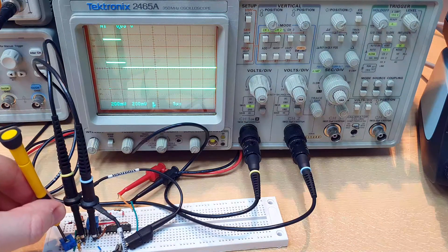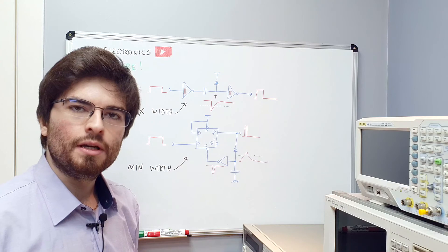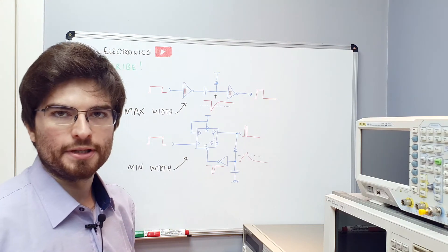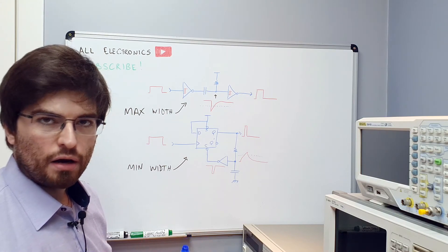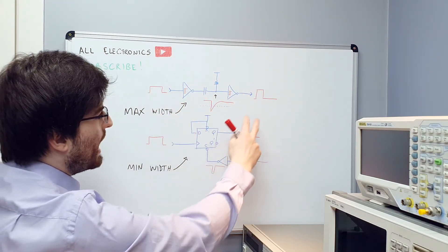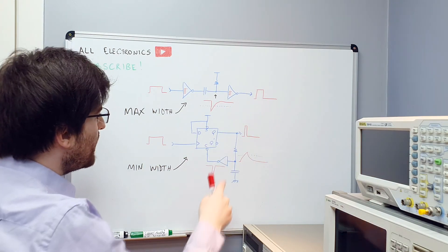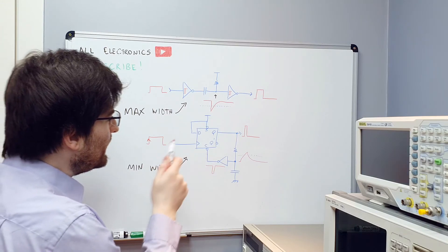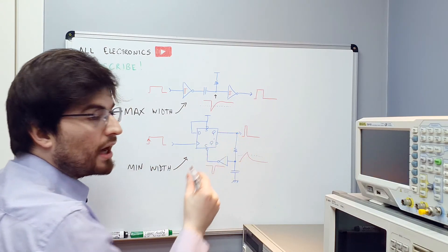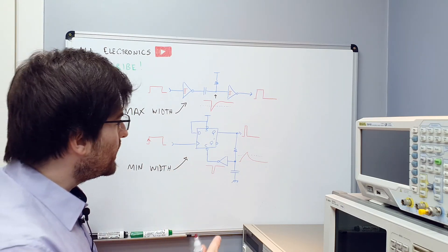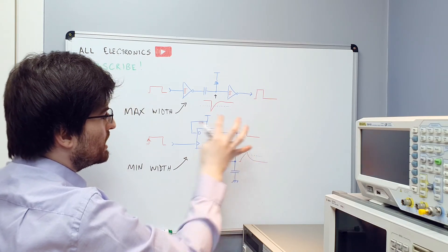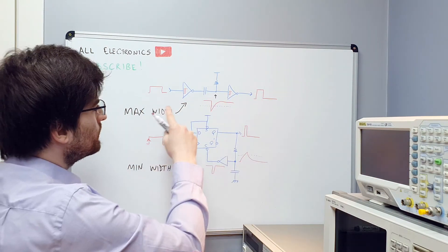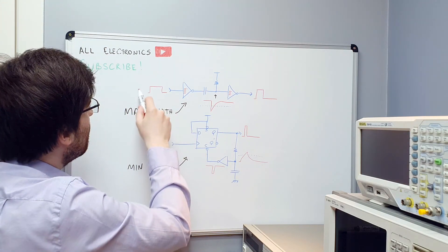Let's see on the whiteboard how this works. We saw the circuit working on the bench and now let's try to understand how it works and see the design approach I used. In this design, we have two circuits working in parallel: a monostable that generates a maximum width output pulse, and a pulse generator triggered by the input edge of the pulse. This circuit generates the minimum pulse allowed. The monostable pulse generator is sensitive to the level of the input signal.